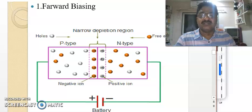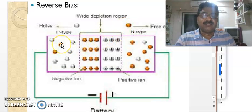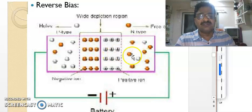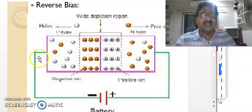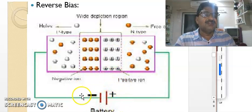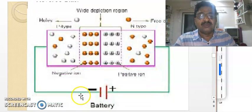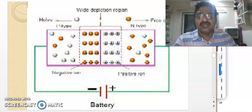Whereas in reverse biasing, the diode does not conduct — it becomes an open switch. In reverse bias, the negative terminal of the battery is connected to the positively charged majority carriers of the p-type semiconductor, and the positive terminal of the battery is connected to the n-type semiconductor with negatively charged electrons. This opposite connection is reverse bias, and in reverse bias the diode does not conduct; it remains like an open switch.